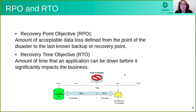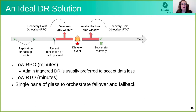Two very important ways we measure disaster recovery are RPO and RTO. Recovery Point Objective is the amount of acceptable data loss in case of recovery from disaster, measured in time units. Recovery Time Objective is the amount of time that an application can be down before it will impact the business, again measured in minutes. The ideal disaster recovery means we want the RPO — the amount of data we lose — to be as low as possible, reduce the RTO, and have a single pane of glass to orchestrate the failover and failback for a much better user experience.